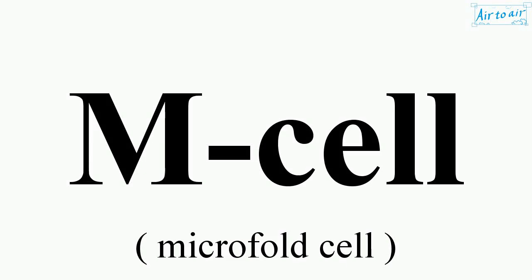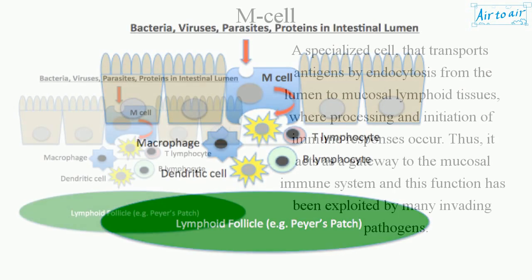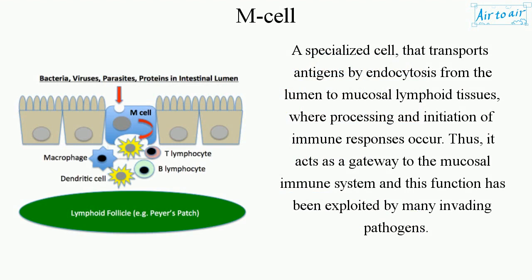M cell: a specialized cell that transports antigens by endocytosis from the lumen to mucosal lymphoid tissues, where processing and initiation of immune responses occur. Thus, it acts as a gateway to the mucosal immune system.